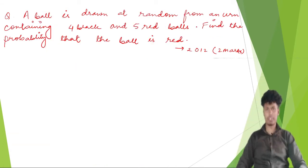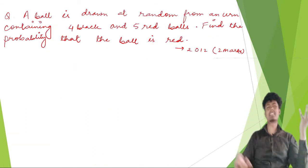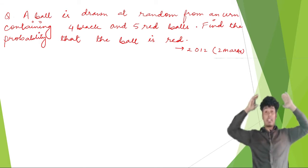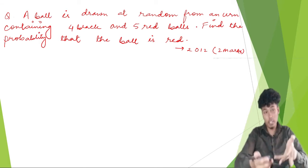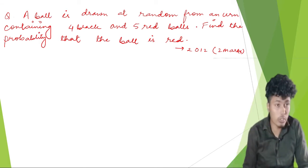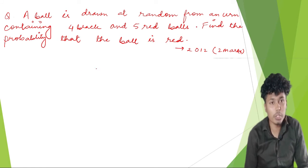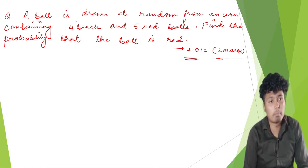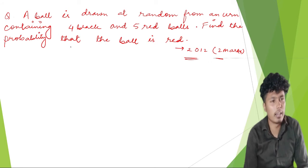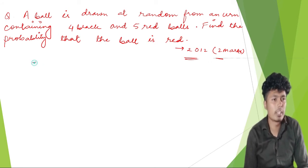Next question, asked in 2012 for two marks: a ball is drawn at random from an urn. An urn is like a bucket or container. It contains 4 black balls and 5 red balls. The question asks: what is the probability of getting a red ball?